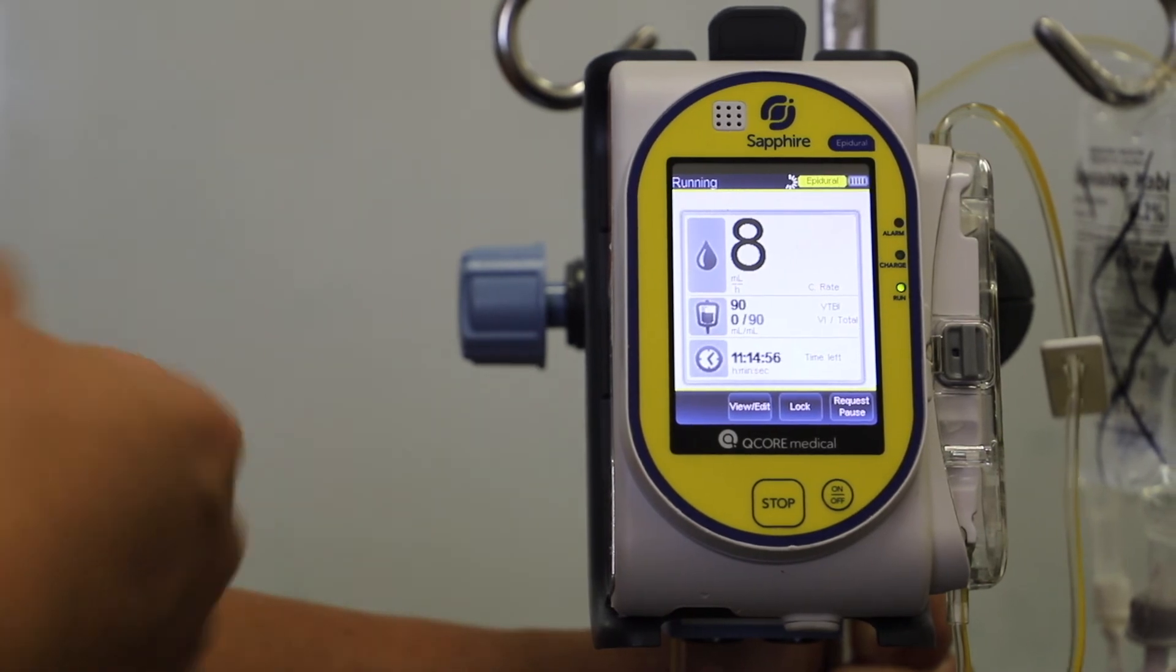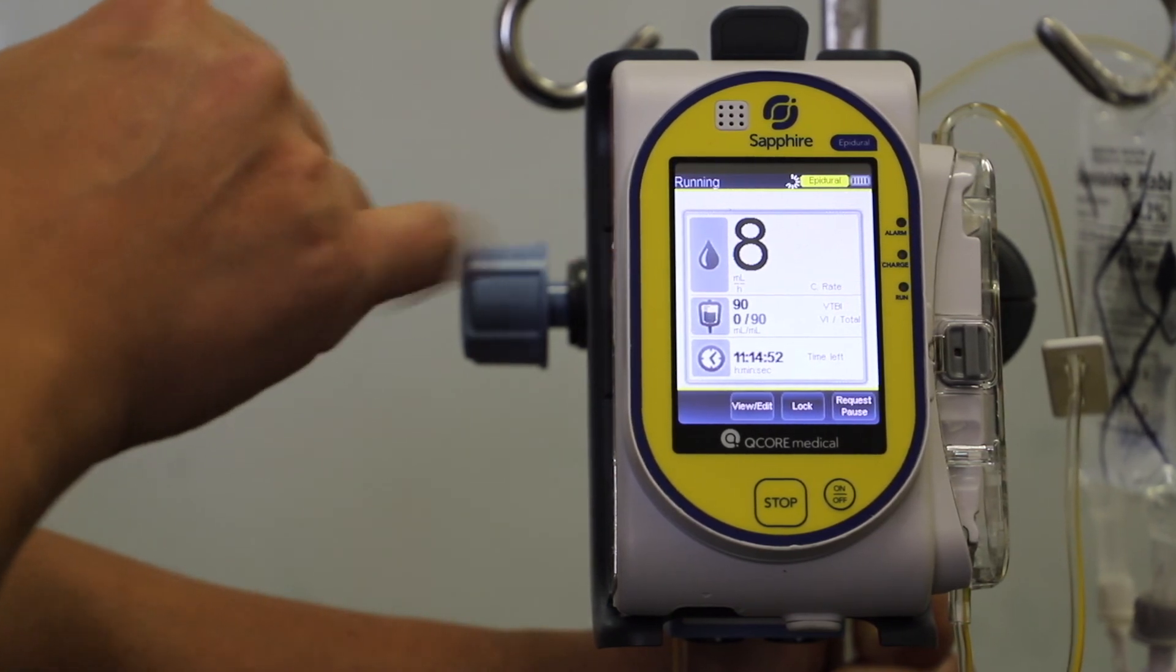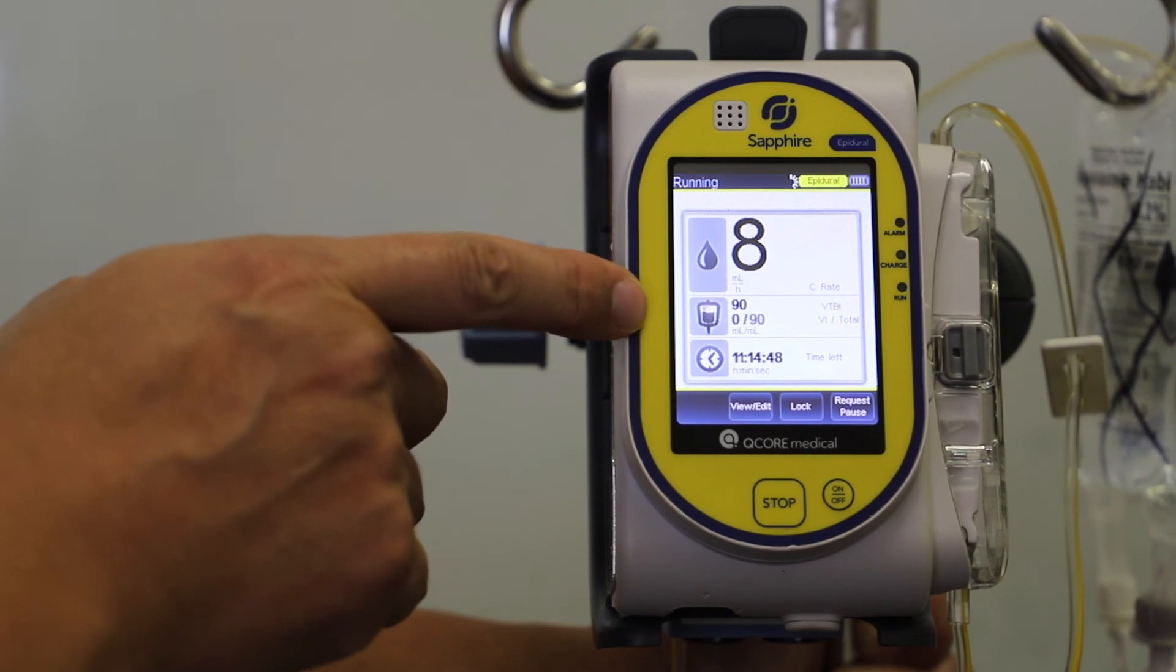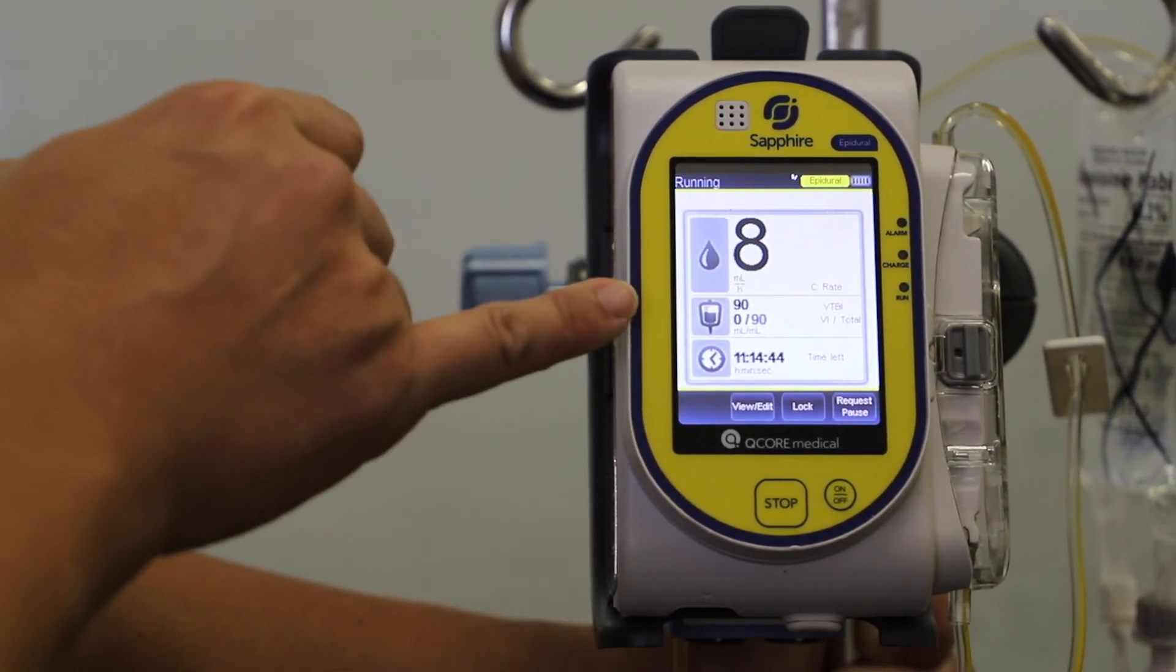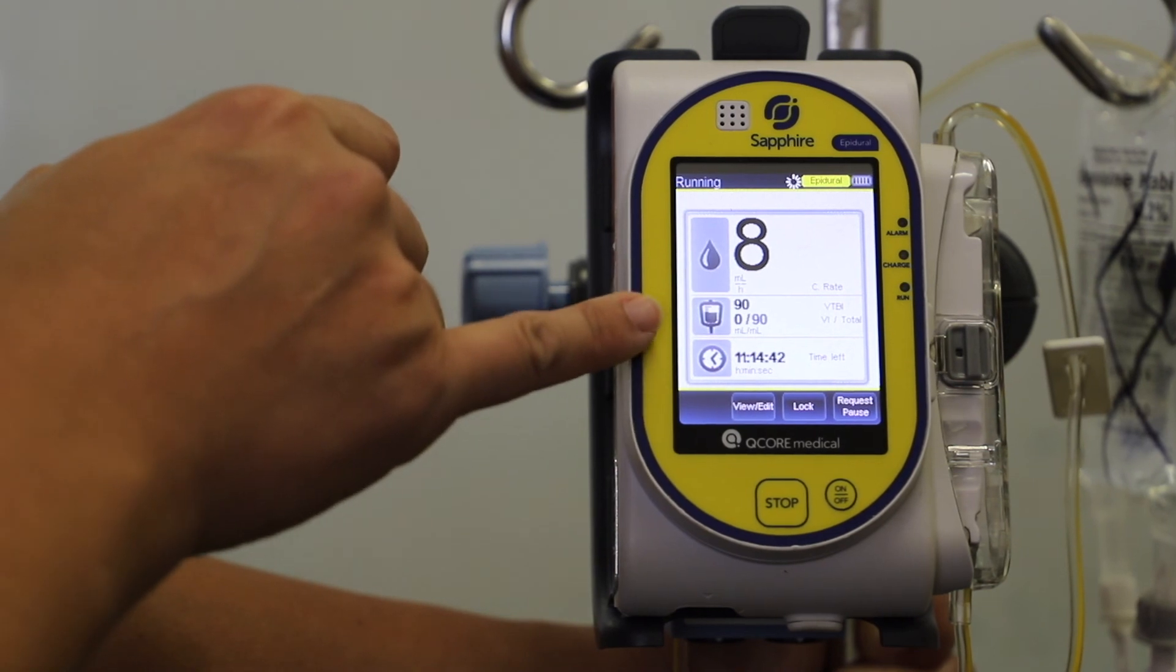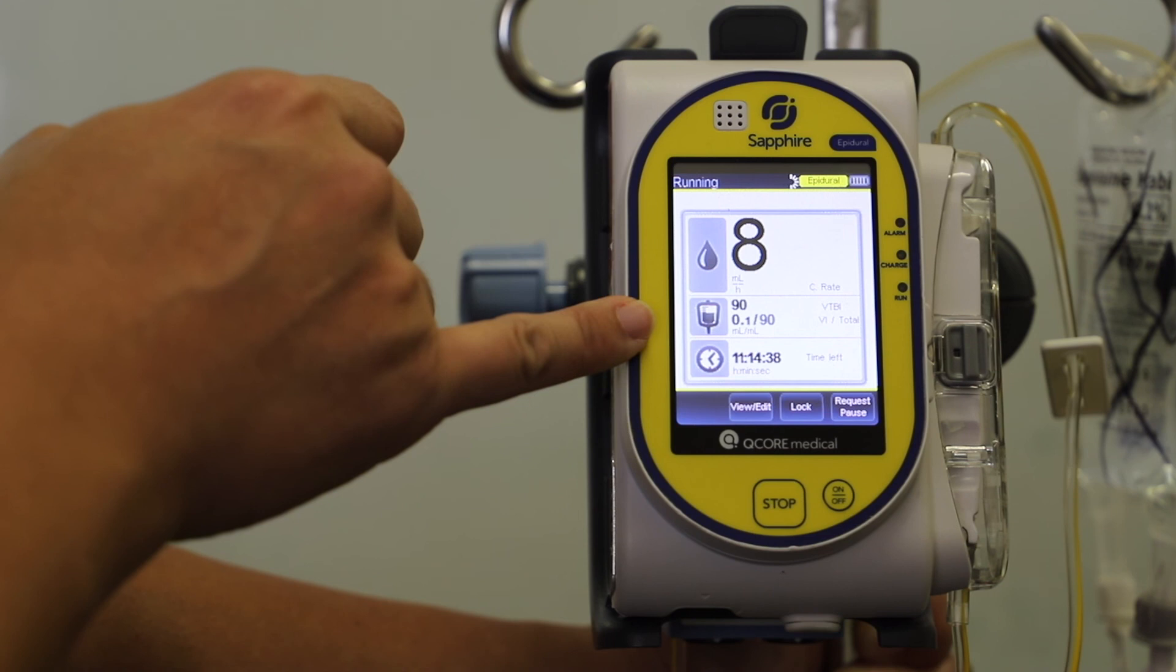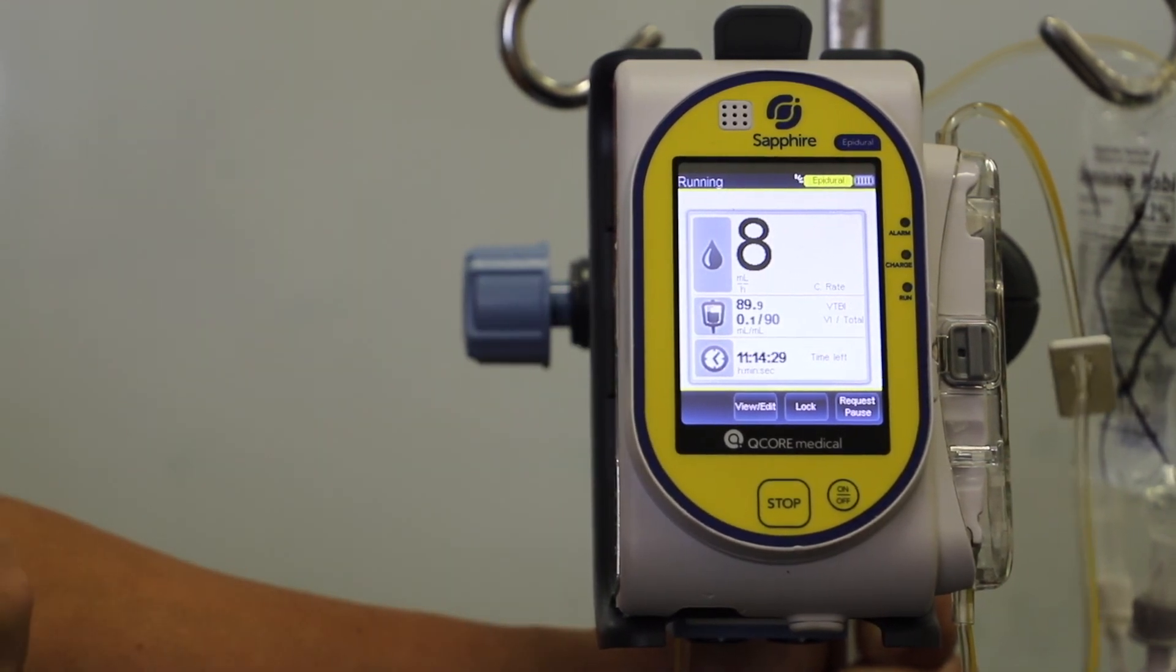So when it's running, it will have a big, bold number that it's running at a continuous rate of eight mils an hour. In the second box here, it indicates volume to be infused, which is 90, and how much has been infused in total. So 0.1 mils has been infused so far of the 90 mils, and it'll count down with the time left.